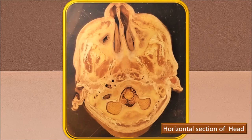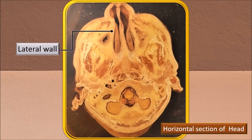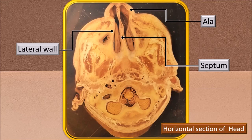Here is a horizontal section of the nasal area. The nasal cavity is reasonably well seen. You can see the lateral wall and the septum. Tracing the lateral wall forwards, there is a flexible component — no bone, just a little cartilage and skin with mucous membrane inside. That area, right in front in the visible part of the nose, is the ala.